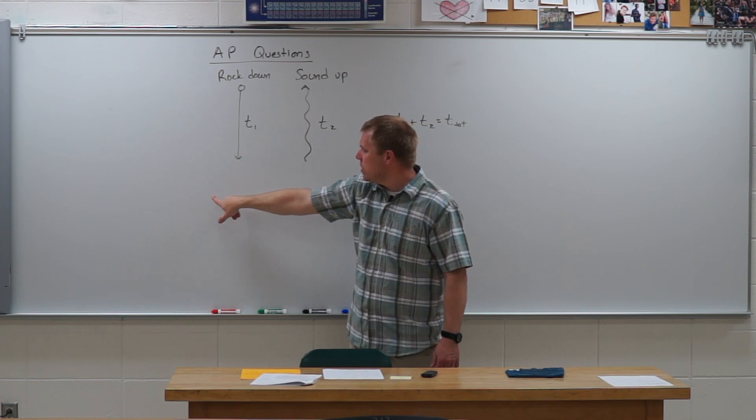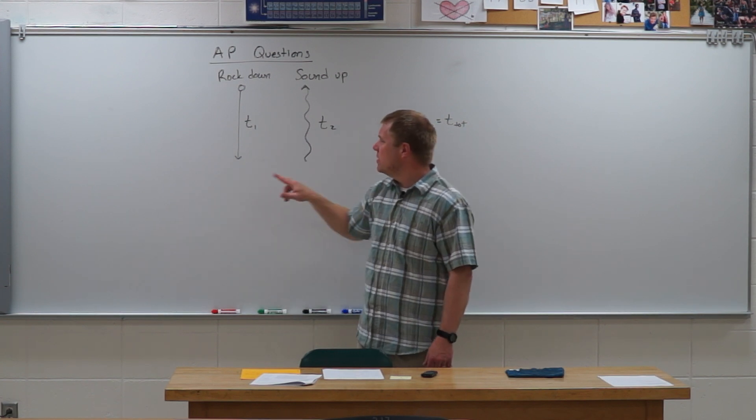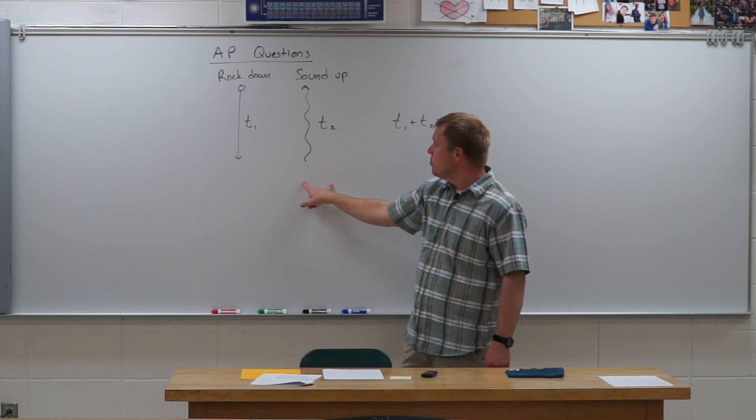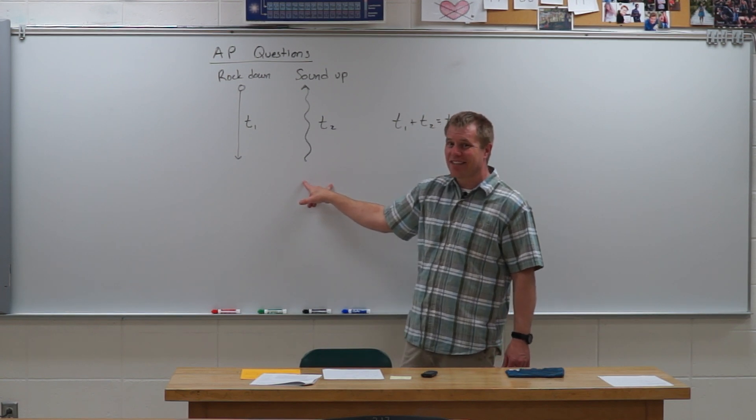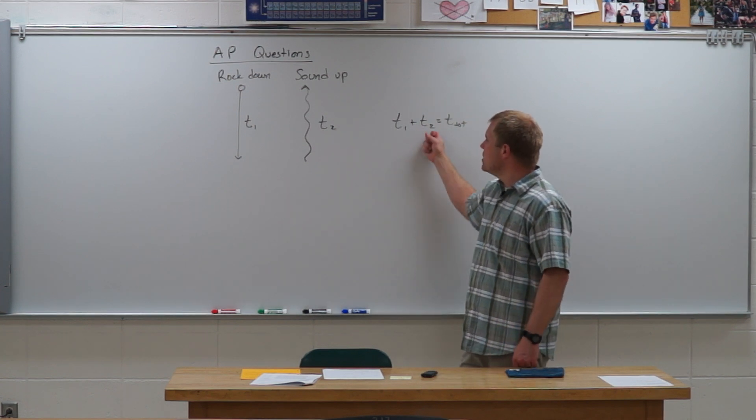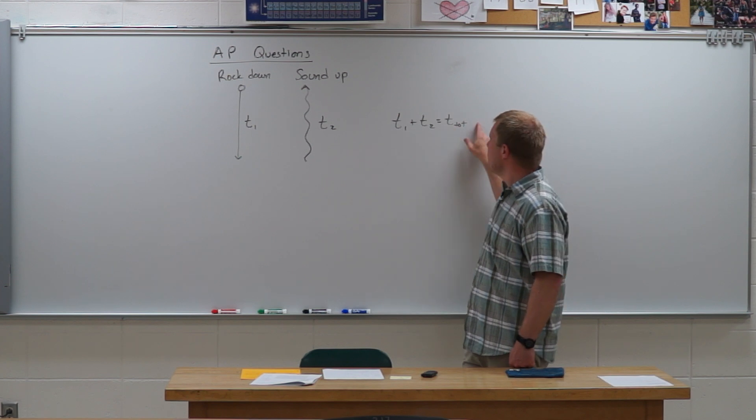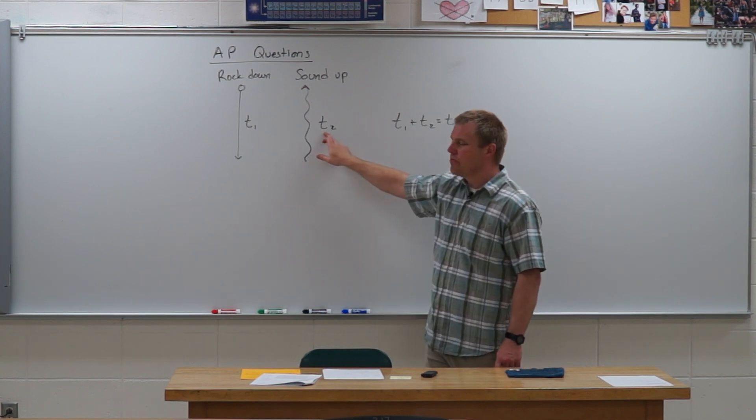You'll create one equation. I'd suggest using equation number two for the rock falling. Again, use equation number two for the sound moving up at a constant velocity that's provided in the question. And then use this to solve for T2, so it's T total given minus T1 and substitute that in for T2.